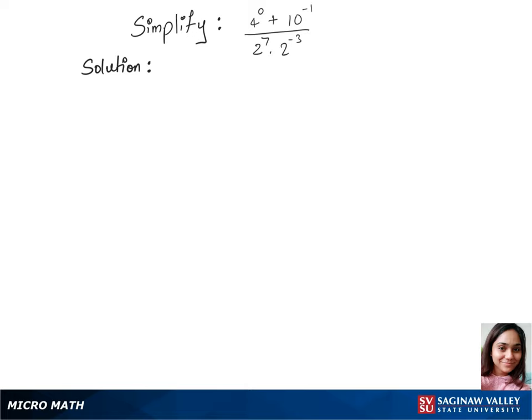Let's simplify this question and we'll use the rules down here to simplify this. So 4 power 0 is 1 using rule 1 here, plus we'll keep this 10 power minus 1 the same.